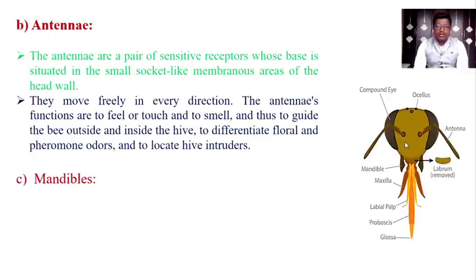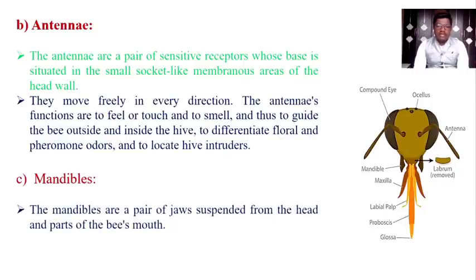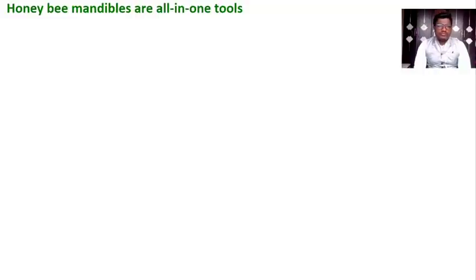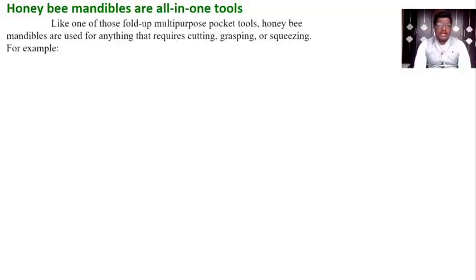Another very important part of the head is the mandibles. The mandibles are a pair of jaws suspended from the head and part of the bee's mouth. Mandibles play a crucial role in the life of honeybees. Honeybee mandibles are all-in-one tools, like a multi-purpose pocket tool, used for cutting, grasping, and squeezing. Let's discuss their different functions one by one.